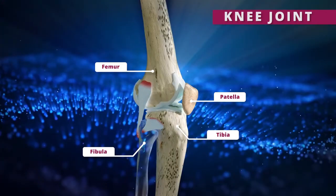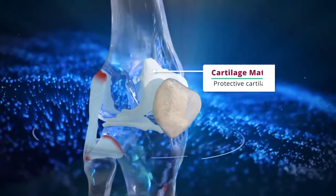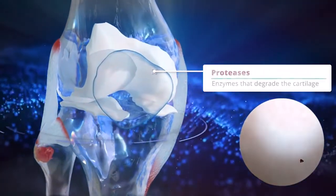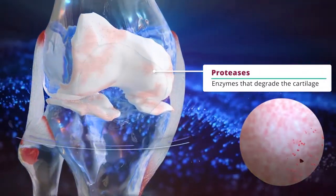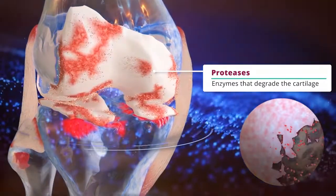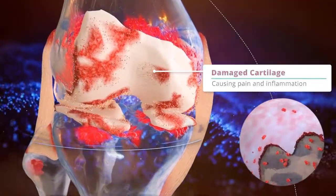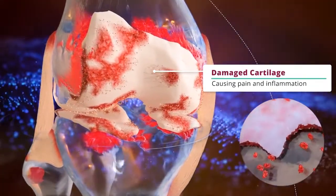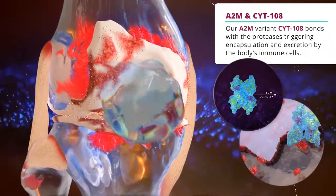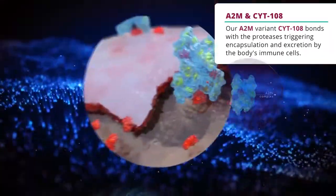Arthritic joints produce several molecules that destroy cartilage, such as catabolic proteases. These proteases activate within the joint cavity and degrade the cartilage matrix, causing pain and inflammation.